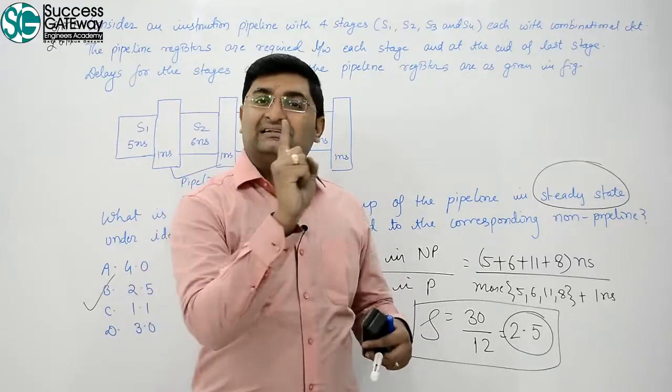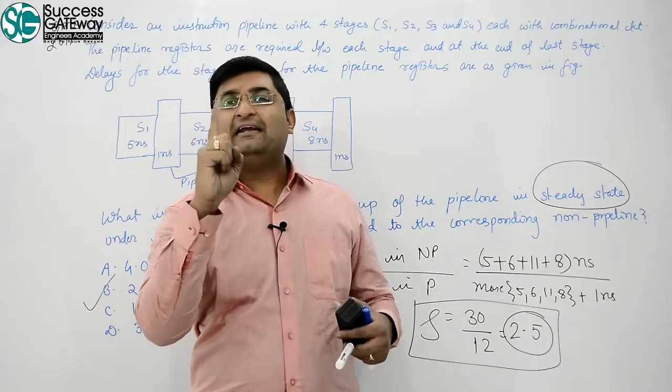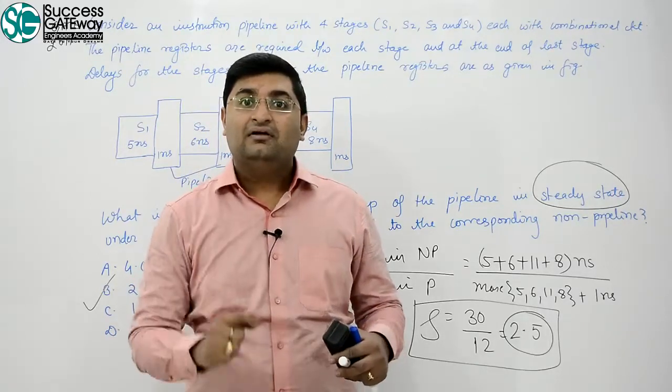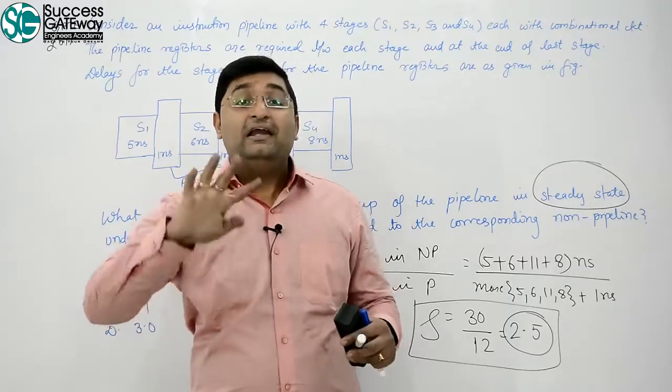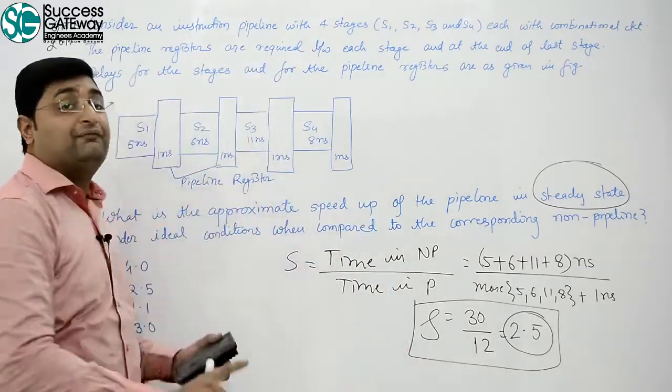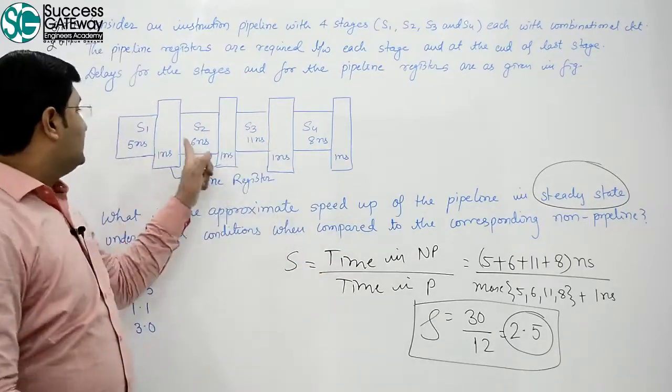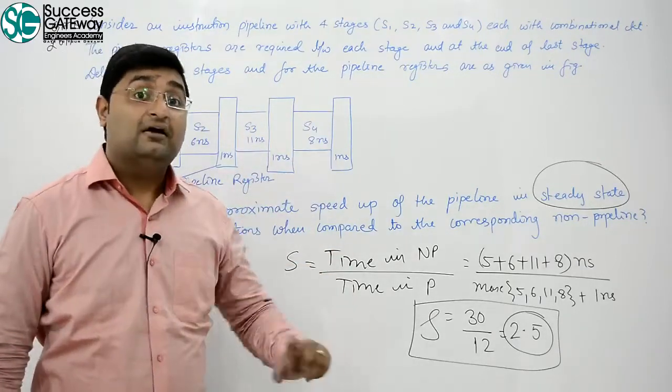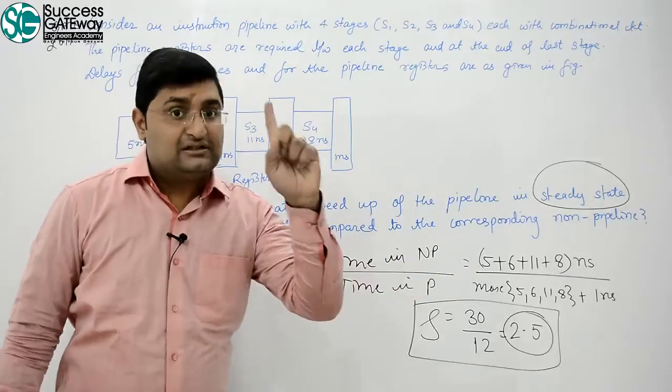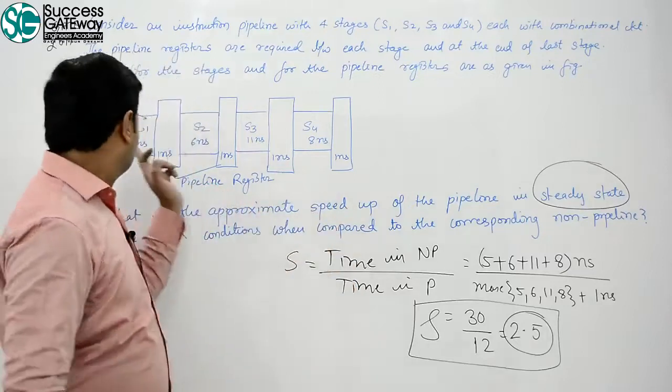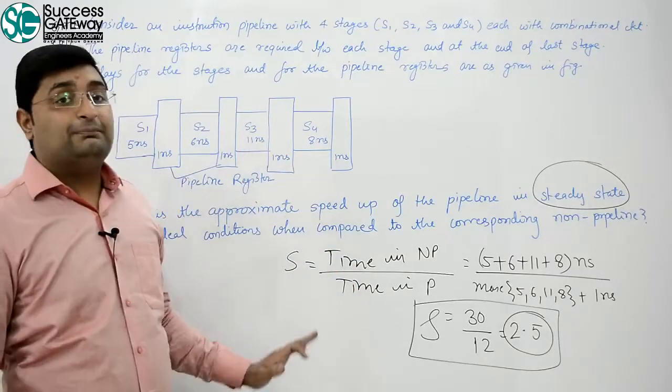Understand one thing. If in the entire system there was only one instruction, for one instruction, if I talk about delay, then in this question, for one instruction, what is the delay in non-pipeline? 5 plus 6 plus 11 plus 8. Because all stages, there's only one instruction, so it will follow them. Non-pipeline: 5 plus 6 plus 11 plus 8.